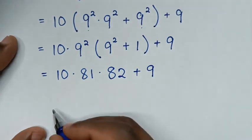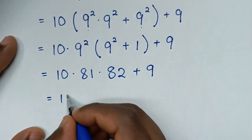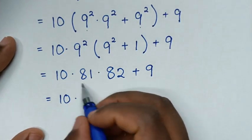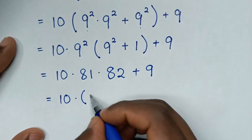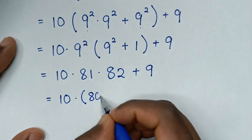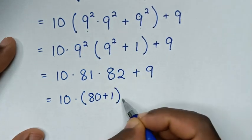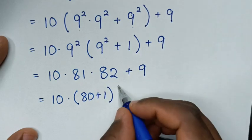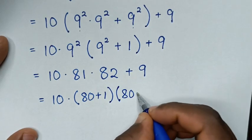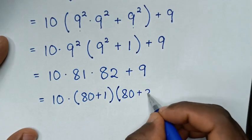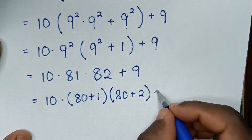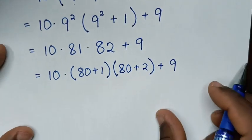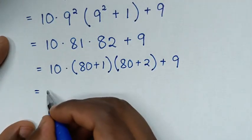Then in the next step it will be equal to: 81 is the same as 80 plus 1, bracket. Then 82 is the same as 80 plus 2, bracket. Then plus this 9. Then it will be equal to: 10 times the bracket containing (80 plus 1)(80 plus 2), then plus this 9.